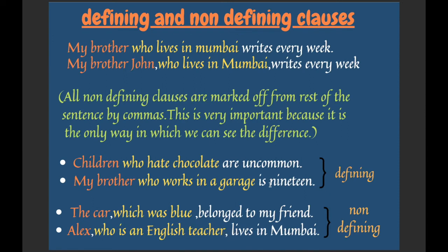Now one last thing — adjective clauses can be of two types: defining and non-defining. Consider these two examples: 'My brother who lives in Mumbai writes every week' and 'My brother John who lives in Mumbai writes every week.' Both contain a subordinate adjective clause, but there is a difference. The first is a defining adjective clause — it answers the question 'which brother?' The answer is 'who lives in Mumbai,' identifying which specific brother is meant.